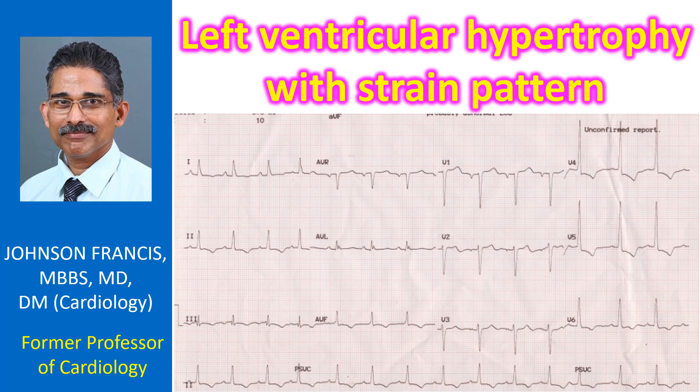Negative P waves in lead V1 are indicative of left atrial overload. Shallow T wave inversions are seen in inferior leads. Two supraventricular ectopics are also seen in the rhythm strip.